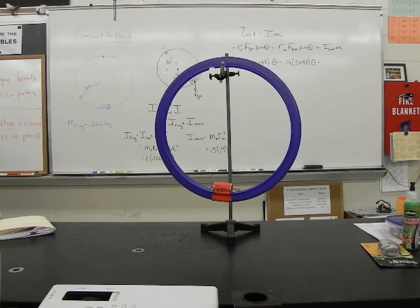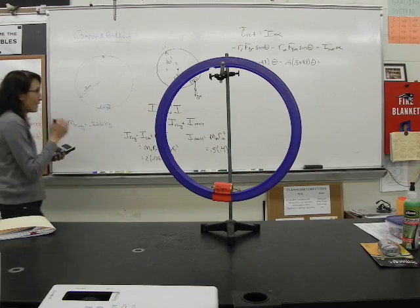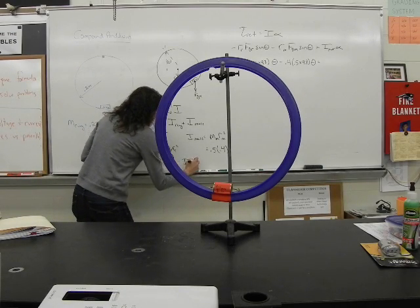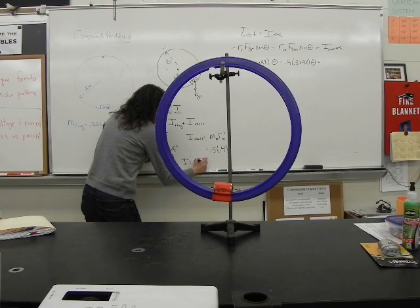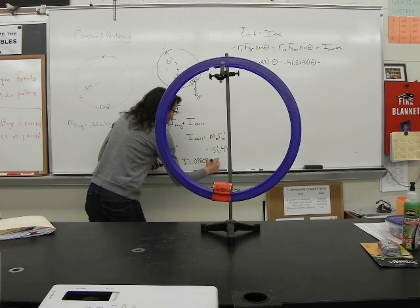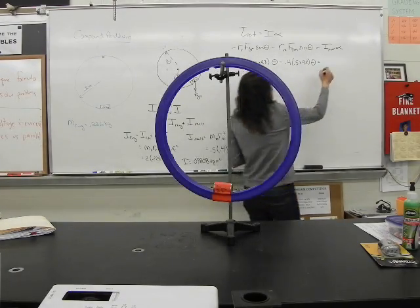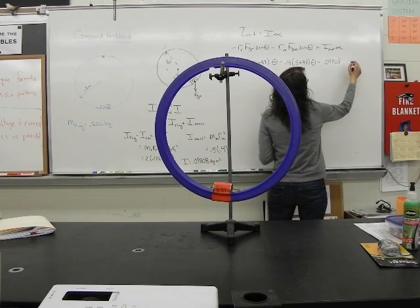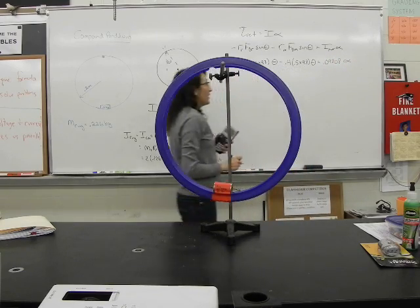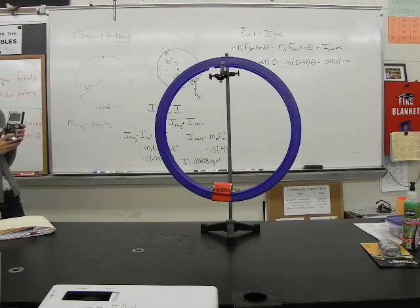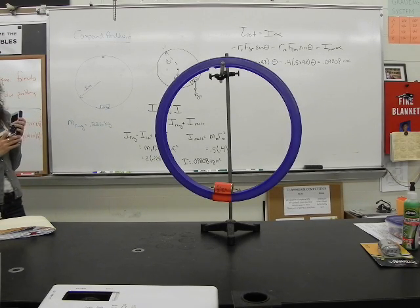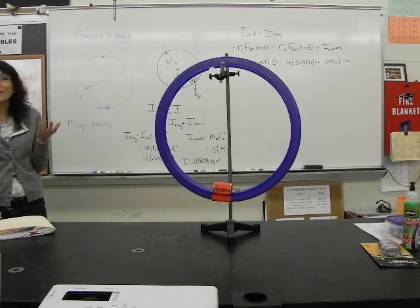Did anybody get 0.09808? All right, so we can plug that in over here. 0.09808 alpha. Again, I'm not rounding off because I'm trying to predict something here. So if we want to find the period, we have to find the omega. How do we find the omega again?